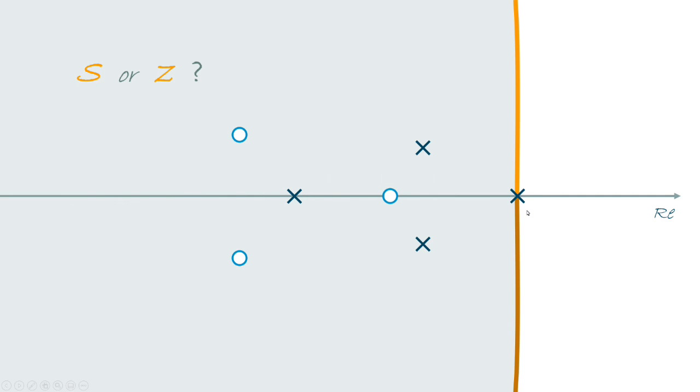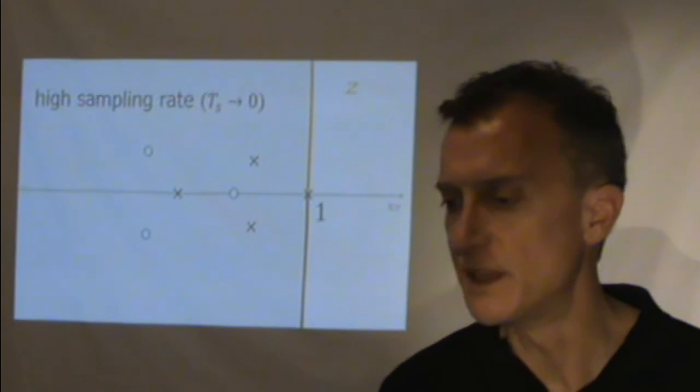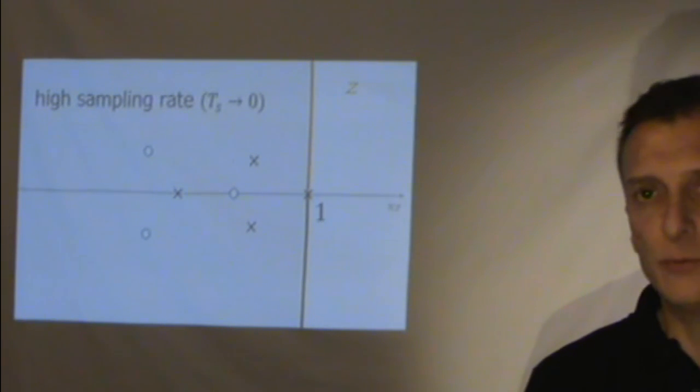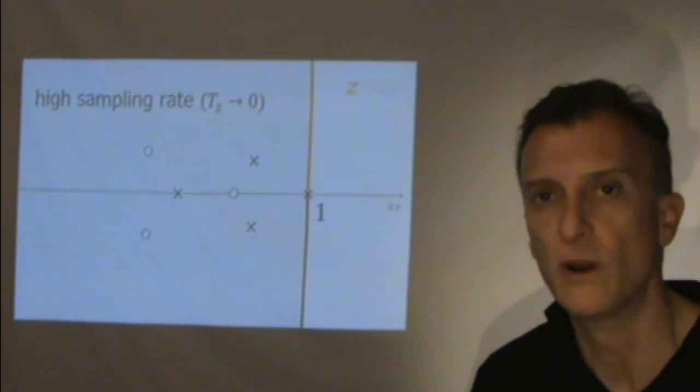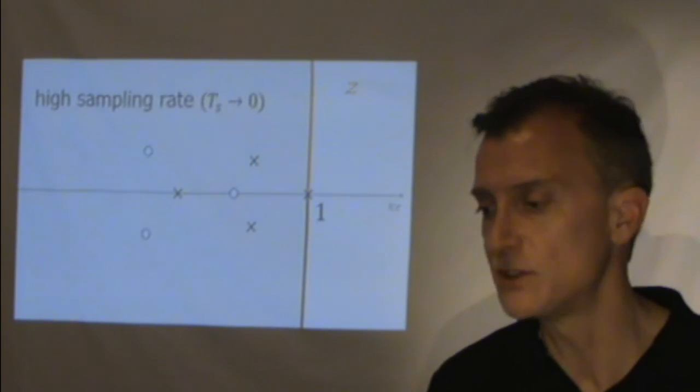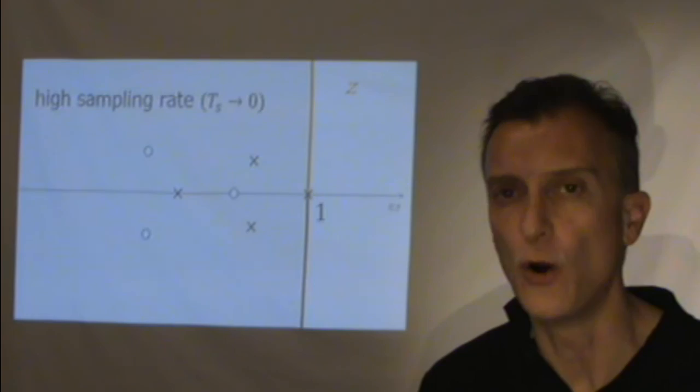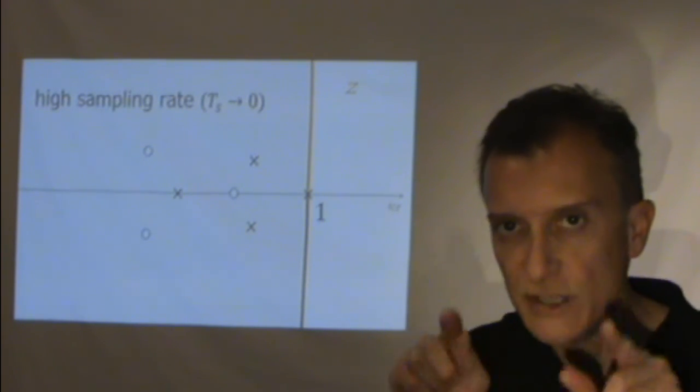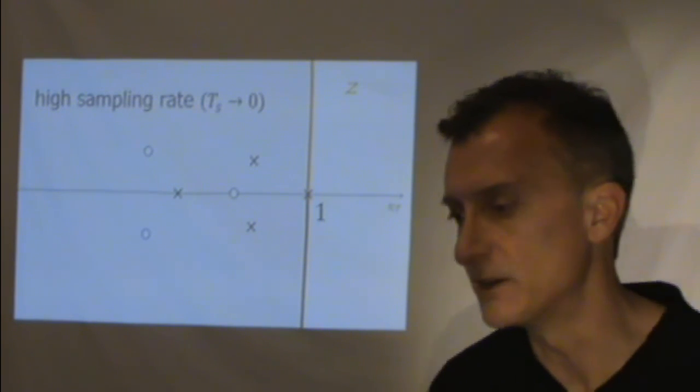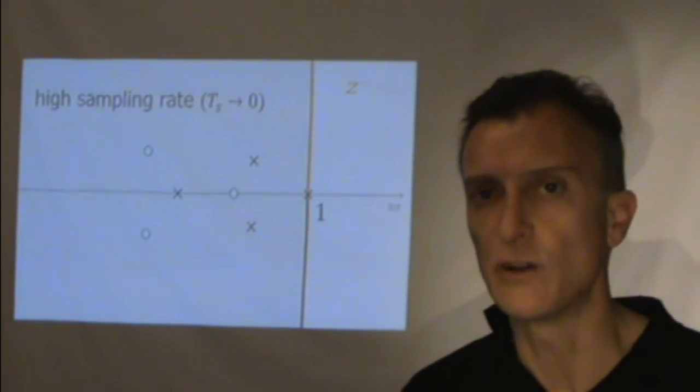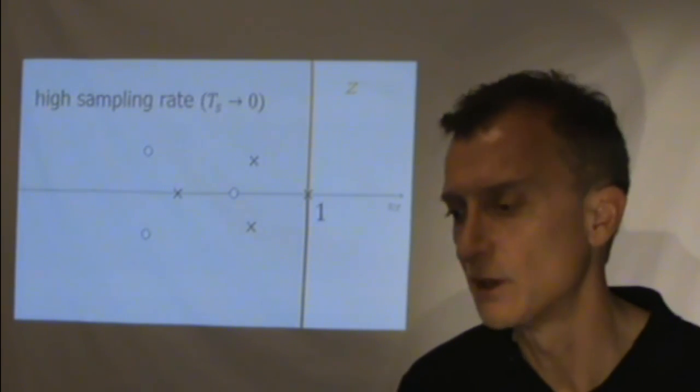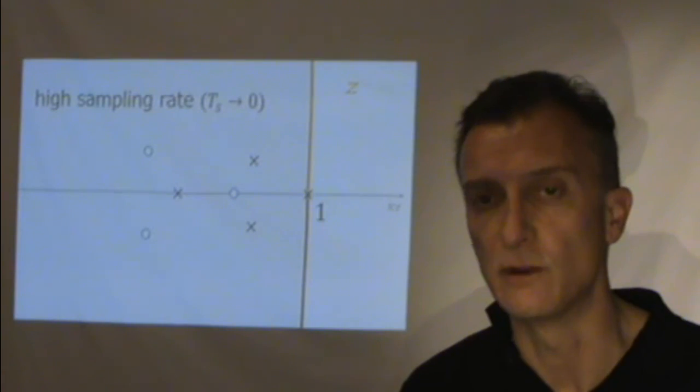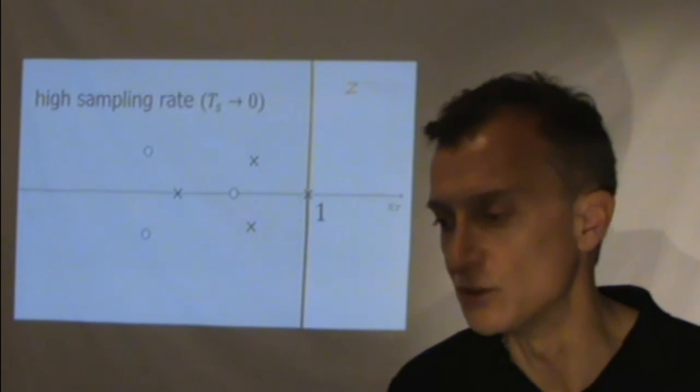Okay? But this will be Z equal to 1. And because you are amplifying a lot, what you will have is that this circle will look almost like a vertical line. So, with a high sampling rate, when you put your computer working almost like a continuous time system, what you will have is that all poles and zeros will go to the region around Z equal to 1.